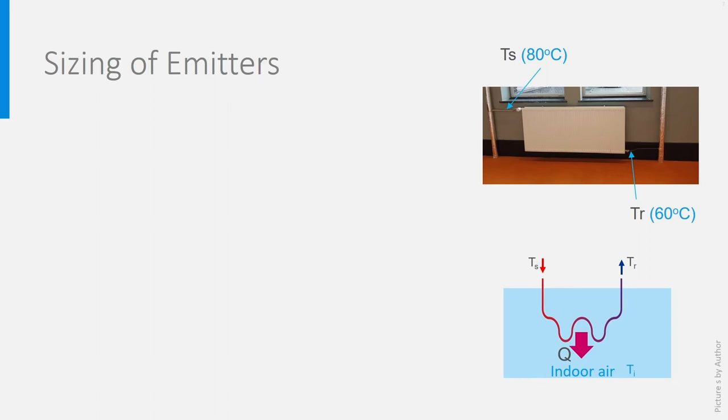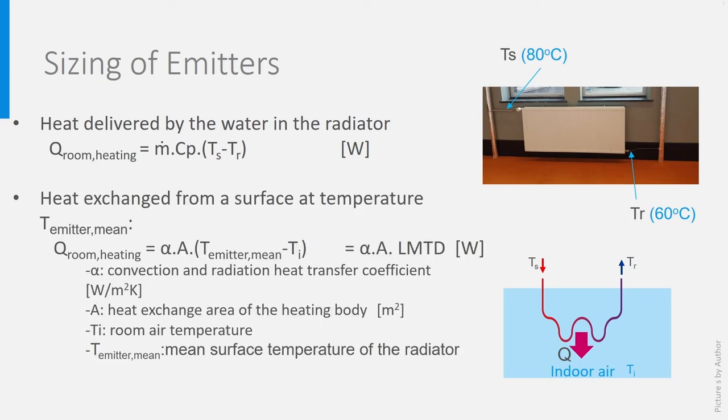More interesting is to remember that this heat is delivered to the room air through the surface area of the radiator, according to this second equation. The heat exchanged between a surface at a certain temperature and surrounding air is the temperature difference between the surface and the air, times the surface area, times a heat transfer coefficient α representing convection and radiation heat transfer. The surface of the radiator has not the same temperature everywhere—it is 80 at the start and 60 at the end. It can better be calculated using the logarithmic mean temperature difference (LMTD), as defined below.